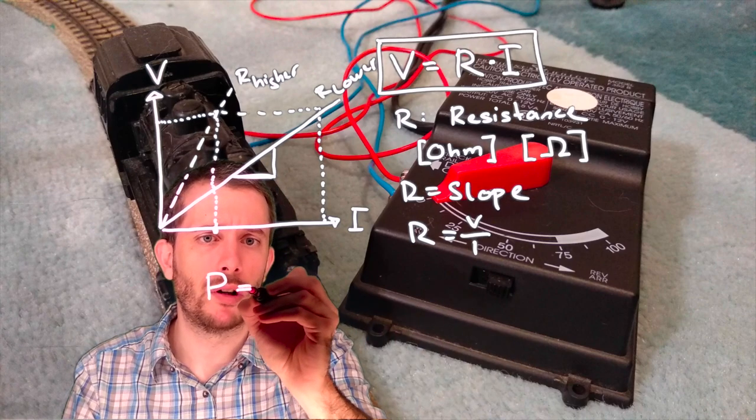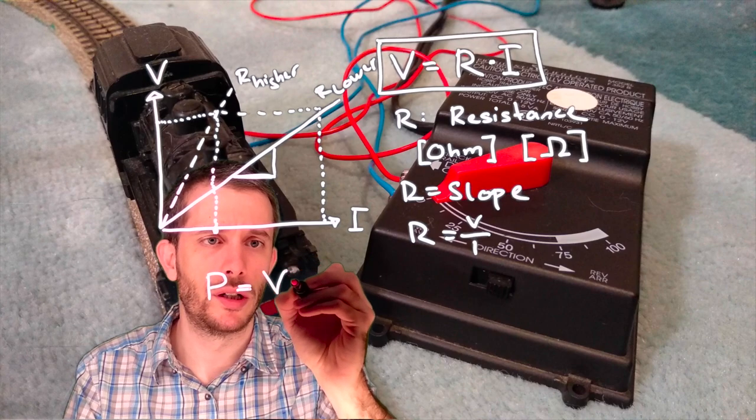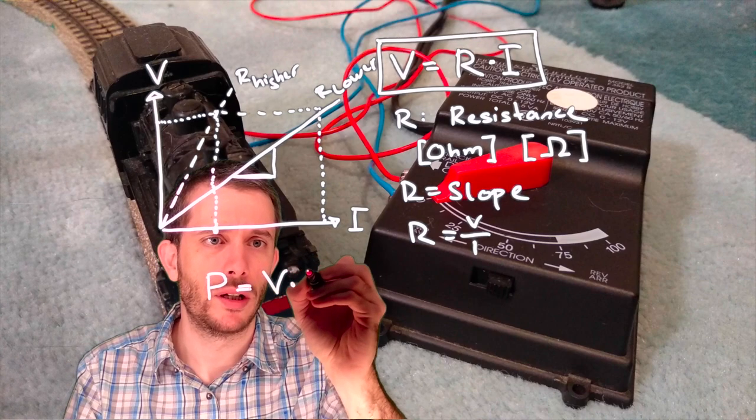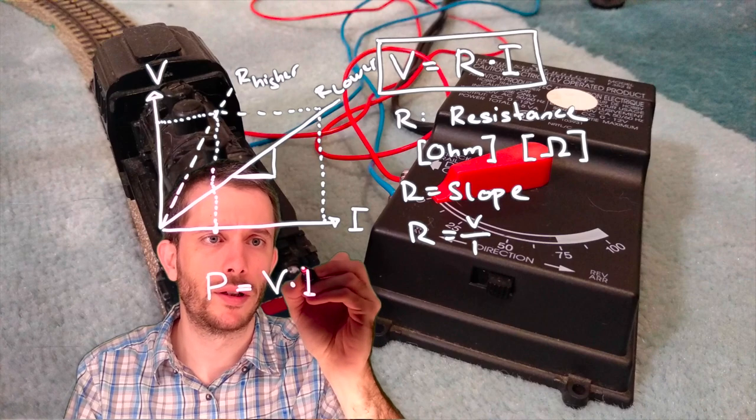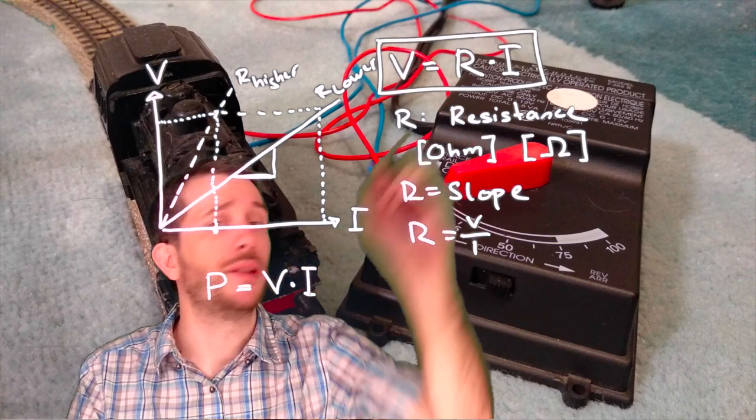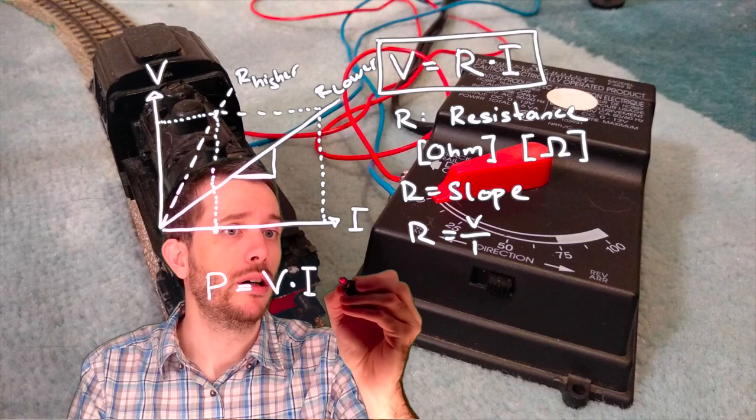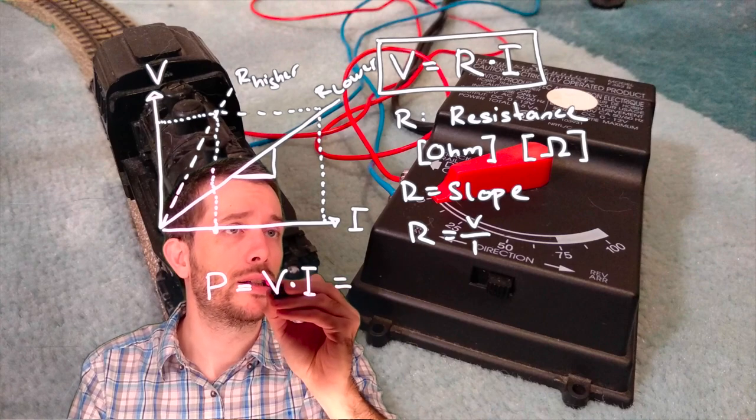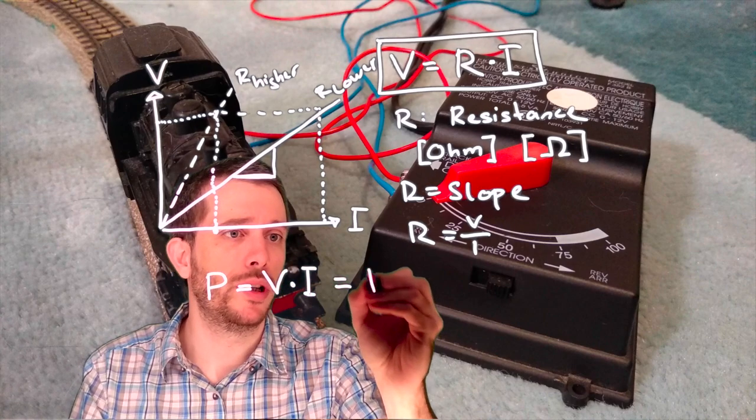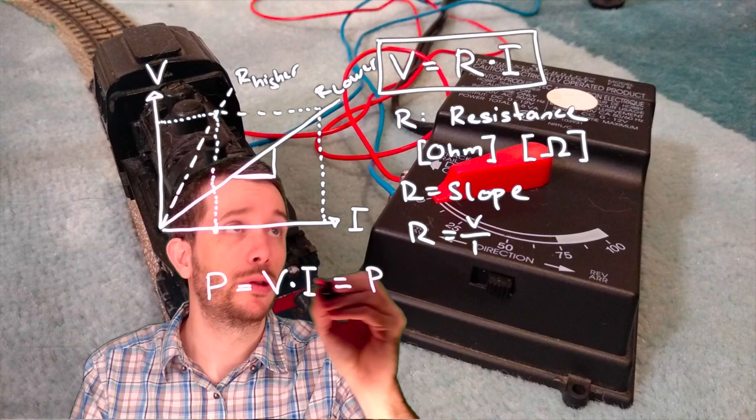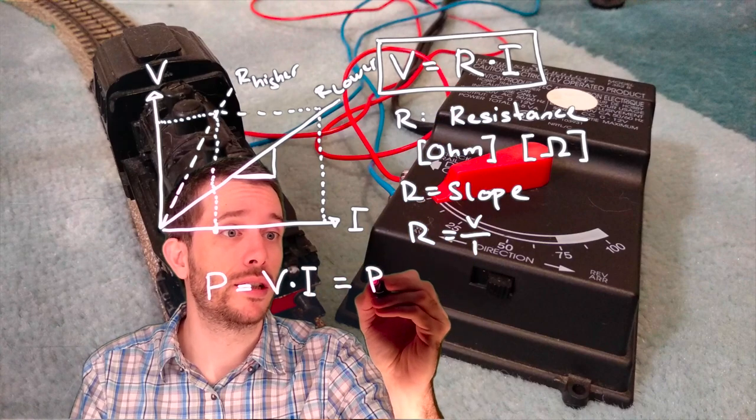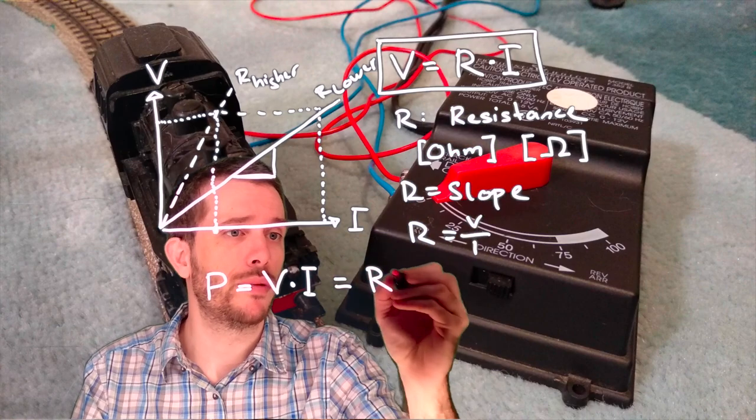The power, we could calculate it as voltage times the current. And now if we build in Ohm's law, we could say that my power is equal to the resistance times the current times the current squared.